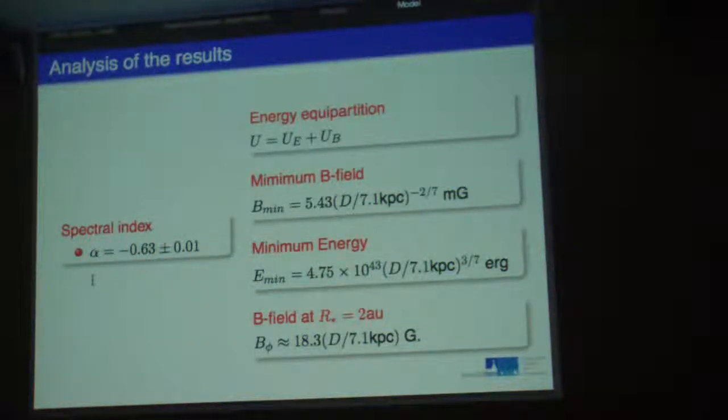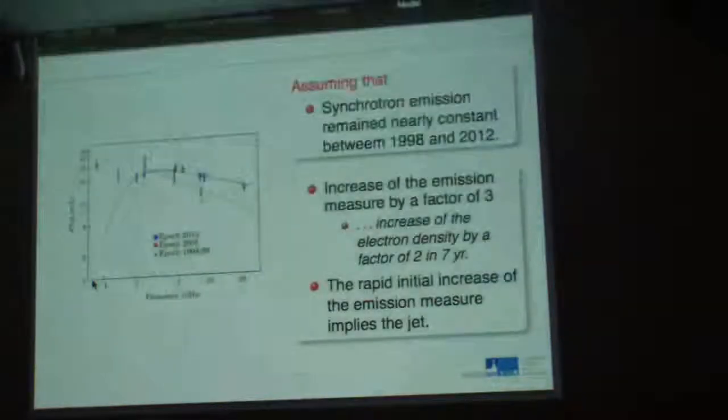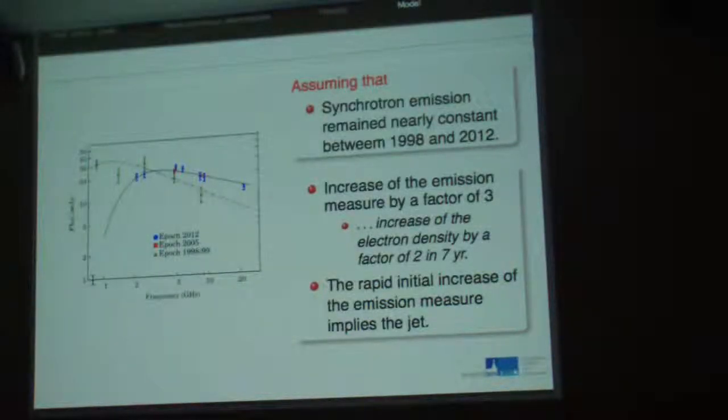We didn't find any polarization of the radiation, so we are not sure which component of the magnetic field the emission is tracing. But assuming it is the toroidal component of the magnetic field, we found that extrapolating this value to the surface of the star, the magnetic field at the stellar surface has to be of this strength.